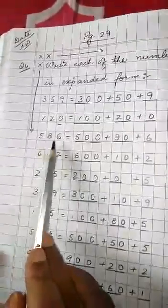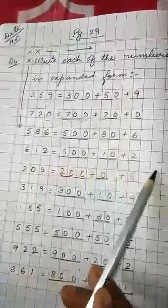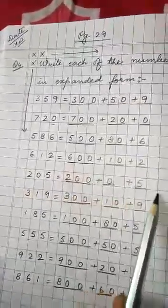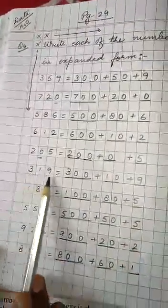Here you see 586: 500 plus 80 plus 6. 612: 600 plus 10 plus 2. 205: 200 plus 0 plus 5. Because here in tens place, 0 is given. So here 319: 300 plus 10 plus 9.